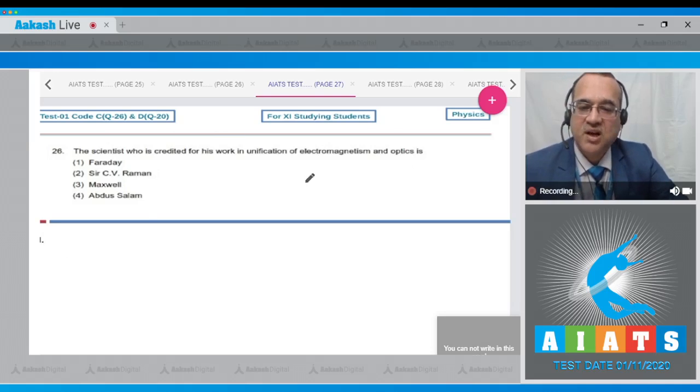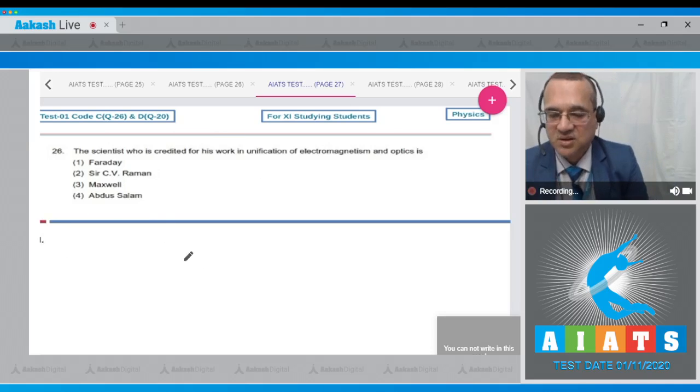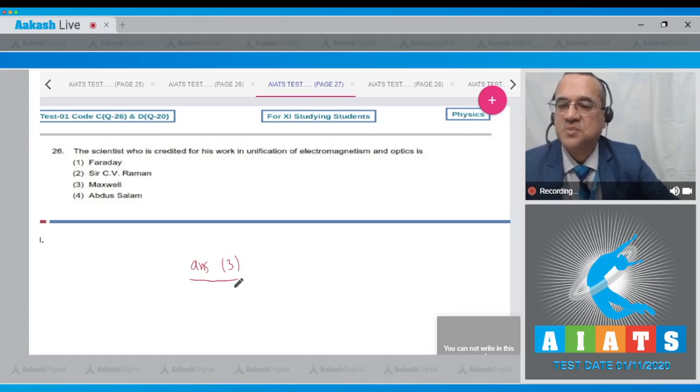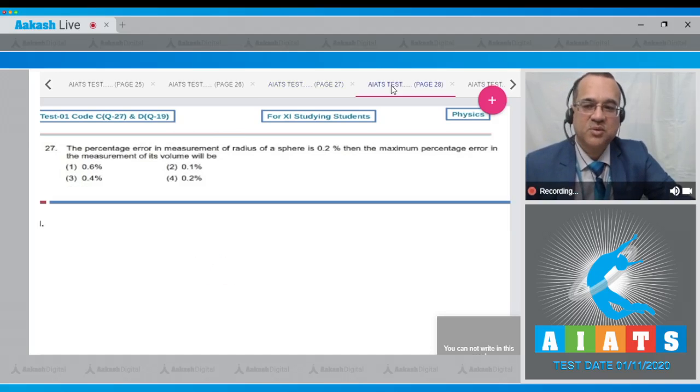Now, from the first unit, the unification of electromagnetism and optics was done by Maxwell. So the answer to this question is Maxwell, so option 3 is the correct option. Let us go to question number 27.